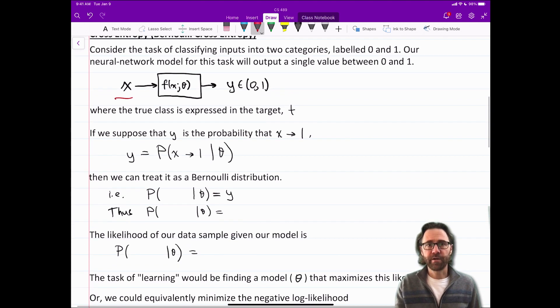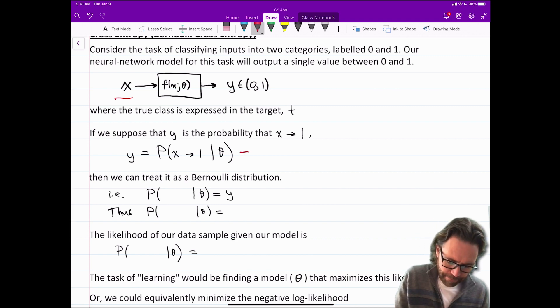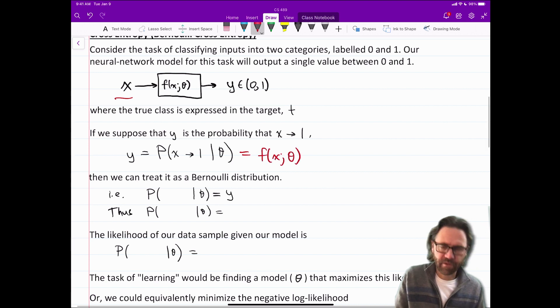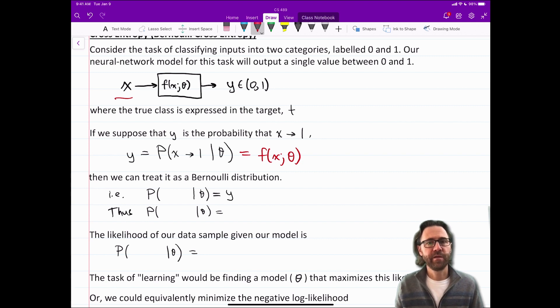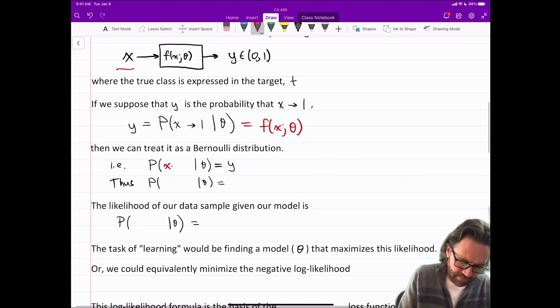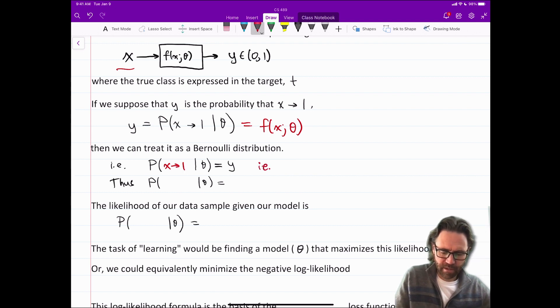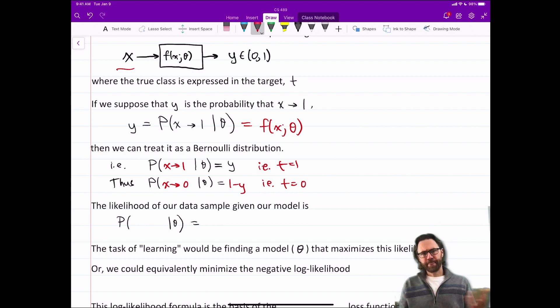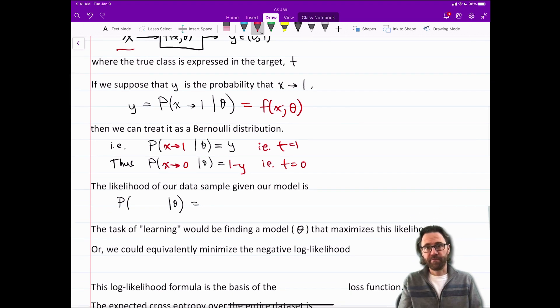If we suppose that y is the probability that X is of class one, then we could say y equals the probability X is of class one given the parameters theta is F of X given theta. So that's the output of the network. We just take the output of the network and interpret that as the probability that the input was of class one. So we can write this as a Bernoulli distribution the probability X is of class one equals Y, the target was one, or the probability that X is of class zero is one minus Y. So Y tells us the probability of both it being class one and being class zero because one minus Y is the probability it's the other class.